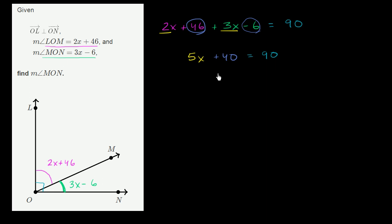Subtract 40 from both sides. On the left-hand side, you're just left with a 5x, and on the right-hand side, you are left with a 50. Now just divide both sides by 5, and we are left with x is equal to 10.